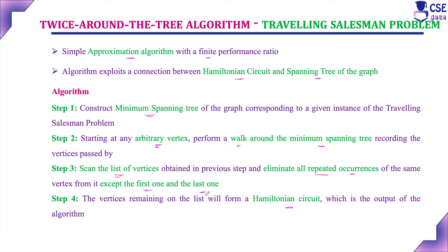It is a very simple procedure. First, construct the minimum spanning tree. Then, from that tree, consider one vertex as the starting vertex and perform a walk around the minimum spanning tree, recording the vertices. Then scan the list of vertices and eliminate any vertex that occurs repeatedly — each vertex should occur only once, except the starting and last vertex. Finally, we will get a Hamiltonian circuit, which is the output of the algorithm.